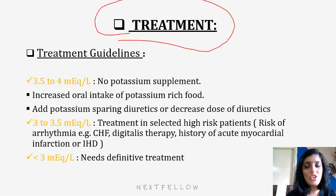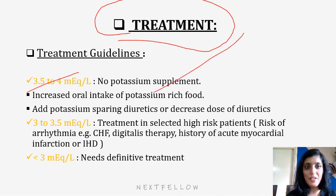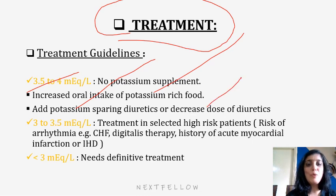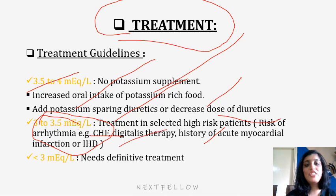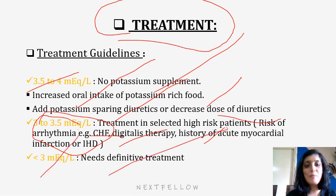Coming to the treatment of hypokalemia: if the serum potassium is between 3.5 to 4 mEq/L, no potassium supplement is required — increase oral intake of potassium-rich foods like banana and coconut, and add potassium-sparing diuretics or decrease the dose of diuretics. If potassium is between 3 to 3.5, treatment is selected for high-risk patients — risks of arrhythmias like congestive heart failure, digitalis therapy, history of acute MI or ischemic heart disease. If serum levels are less than 3 mEq/L, the patient needs urgent supplementation.